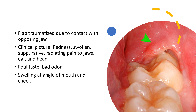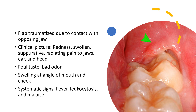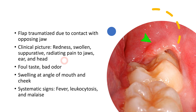Swelling can be appreciated at the angle of the mouth and cheek because inflammation causes swelling around that region. In acute pericoronitis, patients experience fever, leukocytosis — because it is an infective and inflammatory process with increased WBCs — and malaise, feeling very tired and lethargic. These are the systemic signs of acute pericoronitis. In chronic cases, systemic signs are absent; instead, redness, swelling, suppuration, and dull pain radiating to the jaw region are the main features.